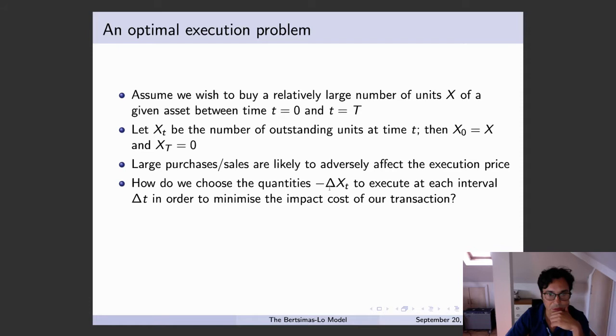So how do we go about selecting these quantity changes in the amount we need to execute. This is number of outstanding units at time T. Think of it as a discrete interval. How do we slice this quantity so that we minimize the impact.